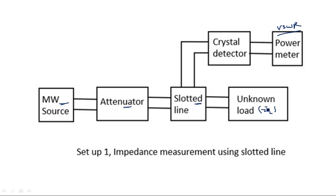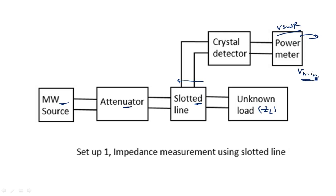We have taken an unknown load connected at the end of the slotted section carriage. By moving this slotted section carriage towards the source, the probe carrier is initially on the right-hand side, towards the load. Moving the slotted section carriage slightly, we observe deflection in the VSWR meter. The point of maximum deflection is taken as V min — the first deflection is taken as the V min deflection.